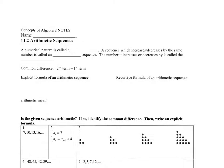A numerical pattern is called a sequence. You've been doing sequences for years. A simple one would be 1, 2, 3, 4. That's a numerical pattern. These dots mean the pattern continues.